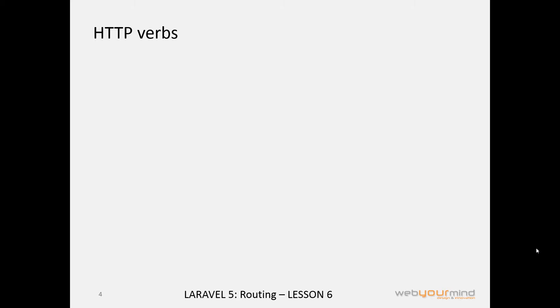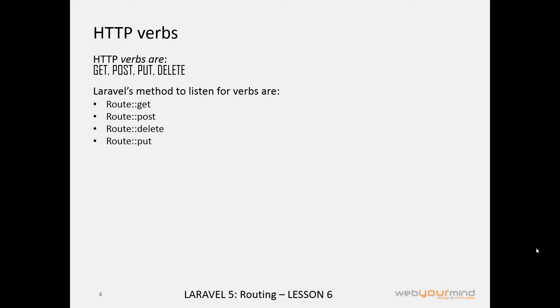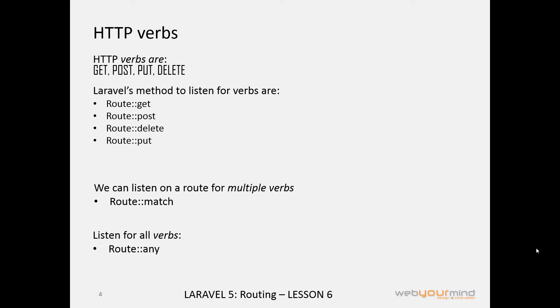Before going further, I want to talk a little bit more about HTTP verbs. There are get, post, put, and delete. Laravel offers four methods to listen to those verbs: Route::get, Route::post, Route::delete, and Route::put. It's exactly the same as in Laravel 4. We have some news also here: we can listen on a route for multiple verbs with Route::match, with a particular syntax we will see later, or we can listen for all verbs with the method Route::any.